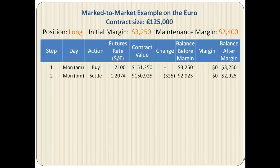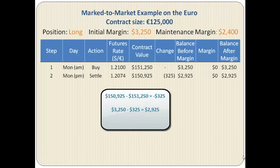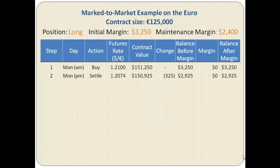At Monday closing time, the settlement is done. The futures rate closes at 1.2074 and the value of the contract drops by $325. The buyer was expecting the currency to rise but instead it has dropped, so $325 is deducted from the buyer's account. The account drops to $2,925 but still is well above the maintenance margin of $2,400, so no margin call is triggered.